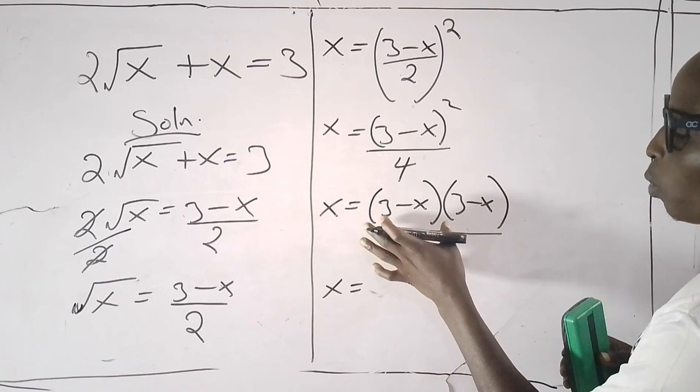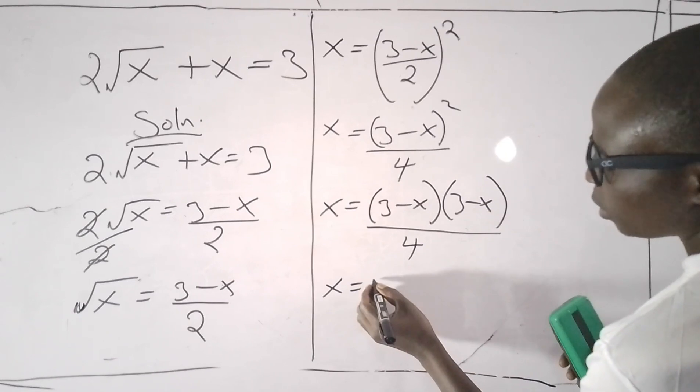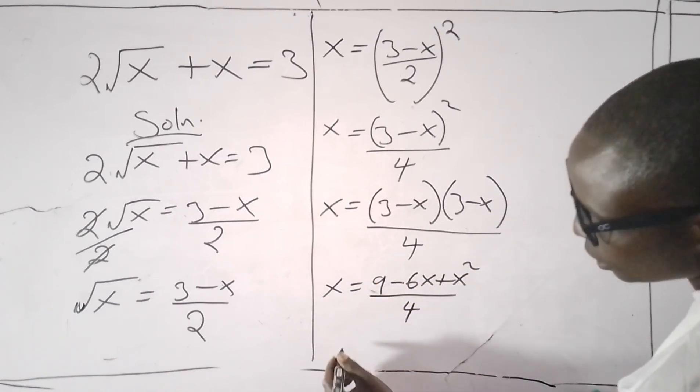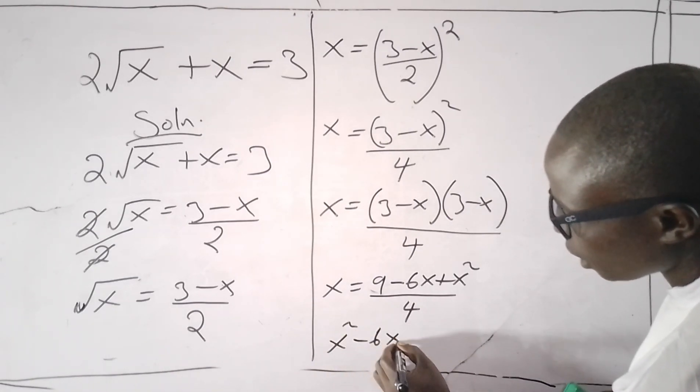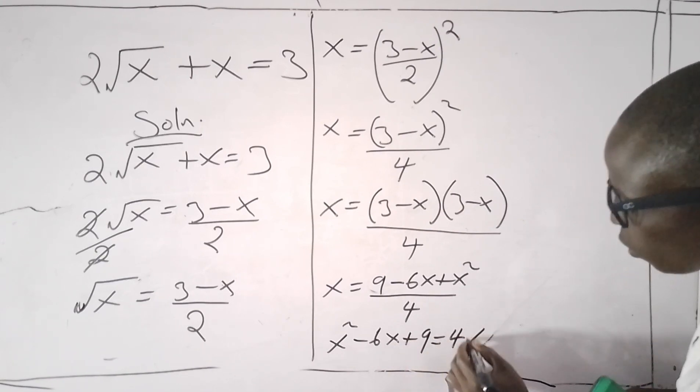We are going to adopt the product rule—the first bracket multiply second bracket. This is the same thing as x² minus 6x plus 9 equals 4x.